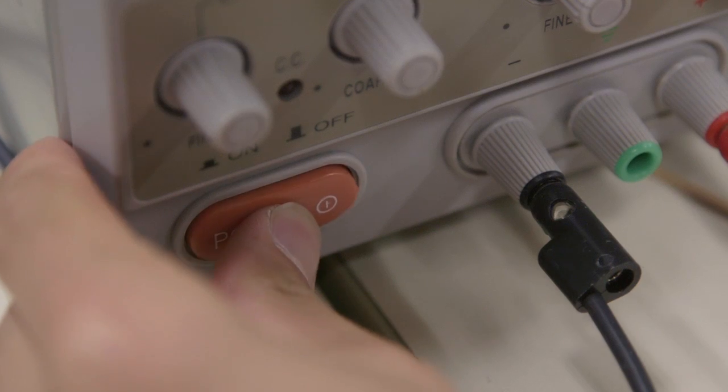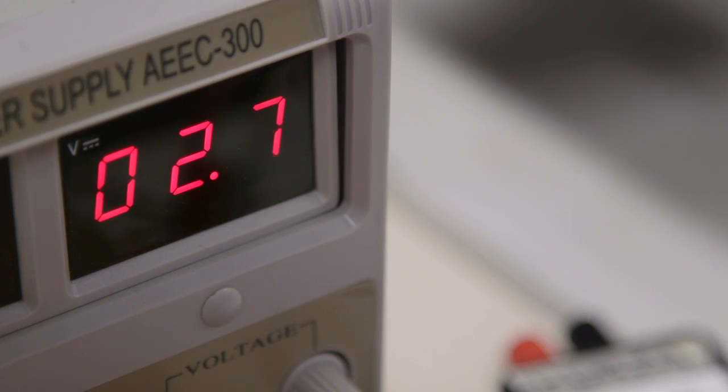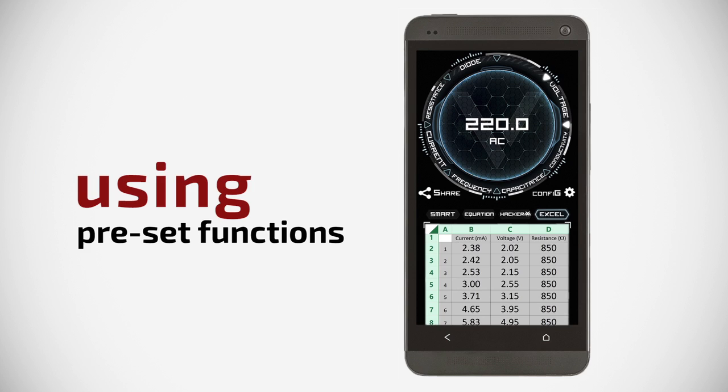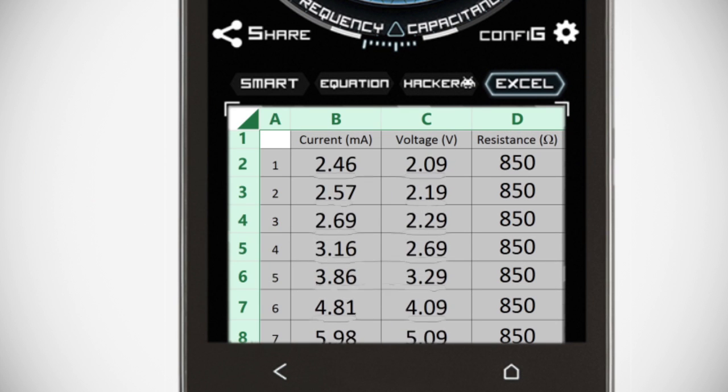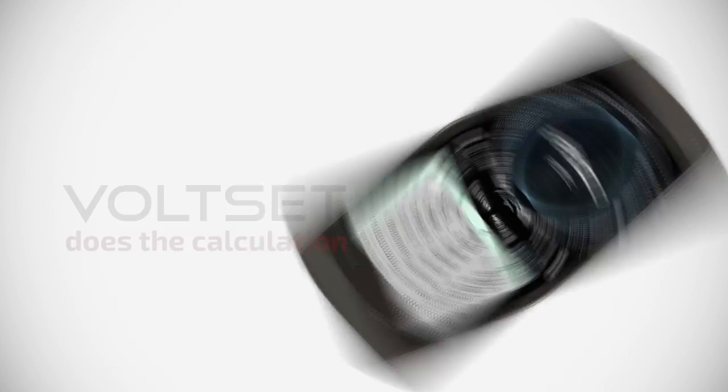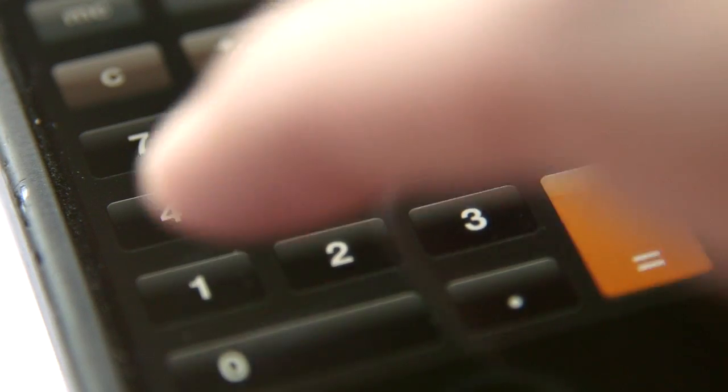Volset can automatically fill in live data into Excel spreadsheets. Using preset functions, results can be populated into the next columns instantaneously. Volset does the calculation for you—no more writing down numbers and plugging them into your calculator.